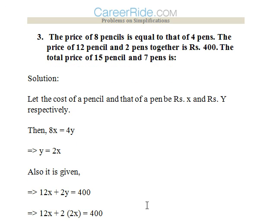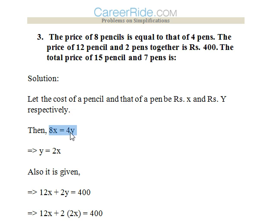Question three: The price of 8 pencils equals the price of 4 pens. The price of 12 pencils and 2 pens together is ₹400. Find the total price of 15 pencils and 7 pens. Let the cost of a pencil be x and a pen be y. From the first condition: 8x = 4y, so y = 2x.